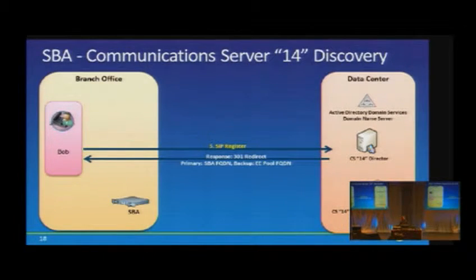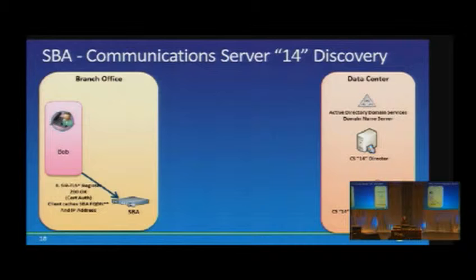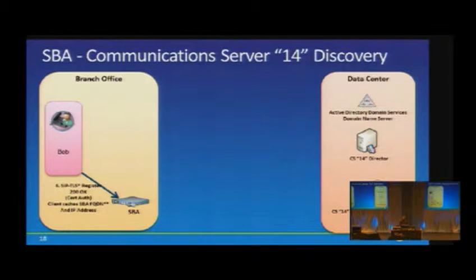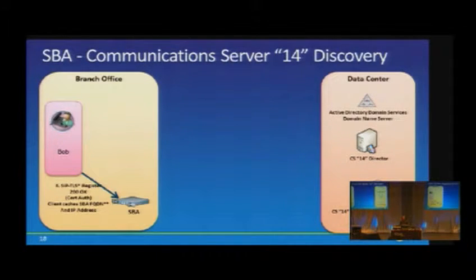Once the certificate process is complete, the client submits the SIP register again and receives a SIP redirect pointing to the IP address and FQDN of that SBA. The client caches the SBA's IP address and FQDN as well, ensuring that if DNS is down it can still locate the SBA. The client then uses the certificate issued by the front-end pool to authenticate against the SBA appliance at the branch location.